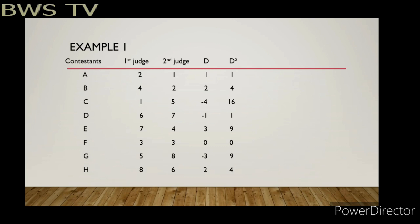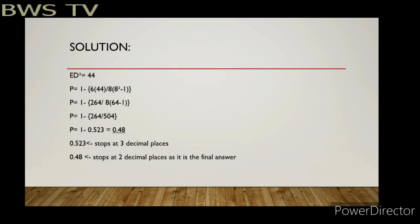So 2 minus 1 is 1, 4 minus 2 is 2, and so on. D squared is simply squaring each D value: 1 squared is 1, 2 squared is 4, negative 4 squared is 16, and so on. The summation of D squared — meaning we add all values in the D squared column — equals 44.